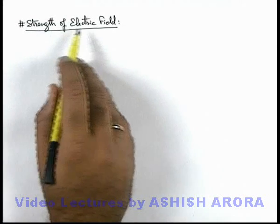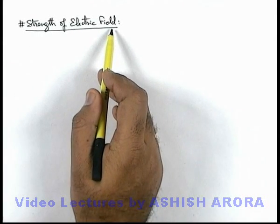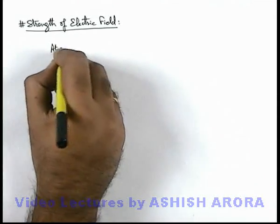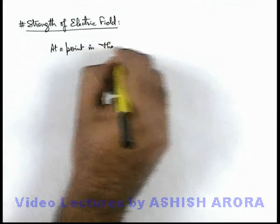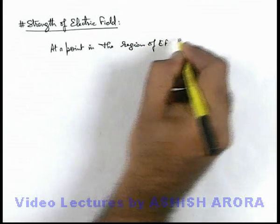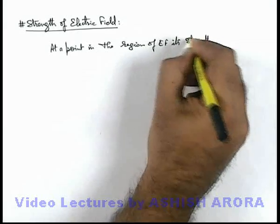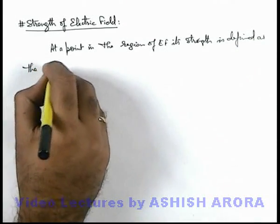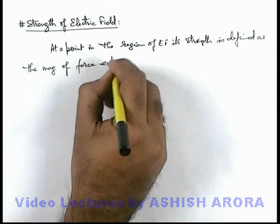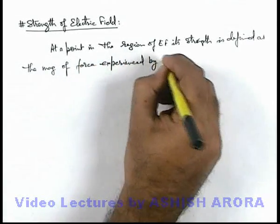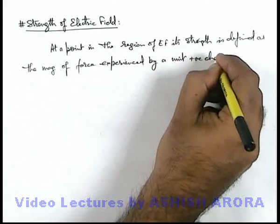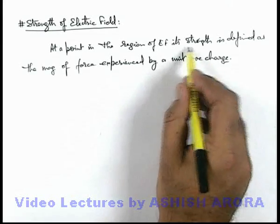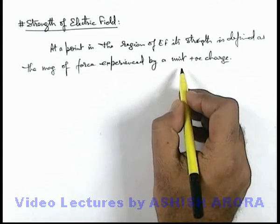Let's discuss the strength of electric field. As we already discussed, electric field is responsible for force on electric charges. At a point in the region of electric field, its strength is defined as the magnitude of force experienced by a unit positive charge. The direction of electric field is given by the direction of force on a positive charge, and its strength is defined by the magnitude of force experienced by a unit positive charge.